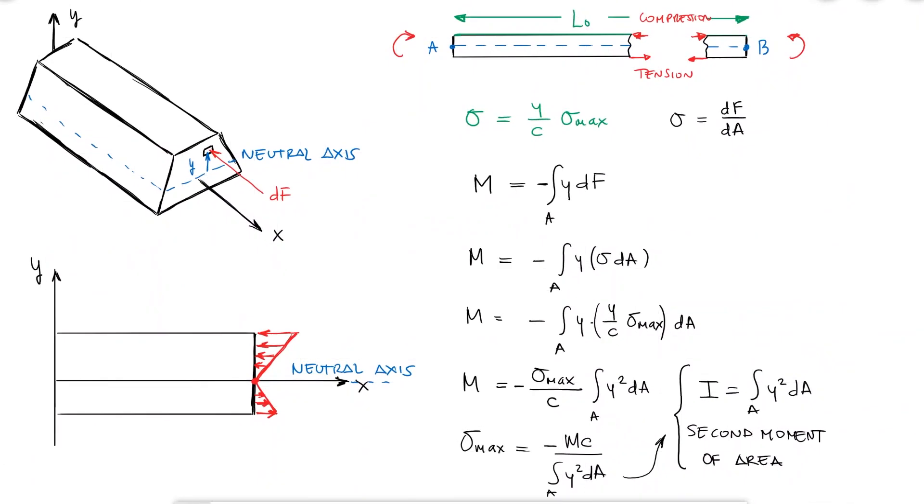Going back to my stress equation, we see that in general sigma is equal to minus M times y over I, which is the general equation for the normal stress due to pure bending.